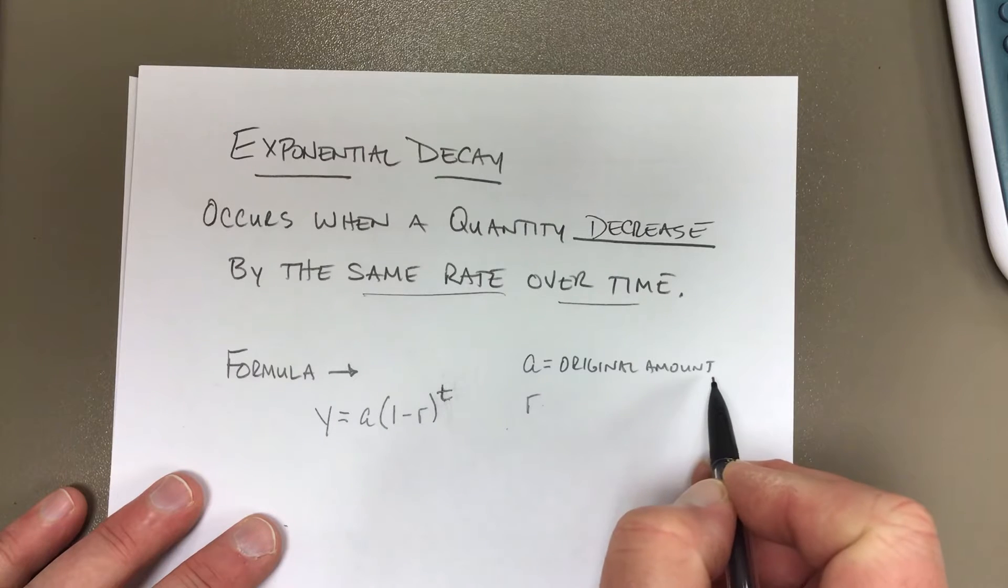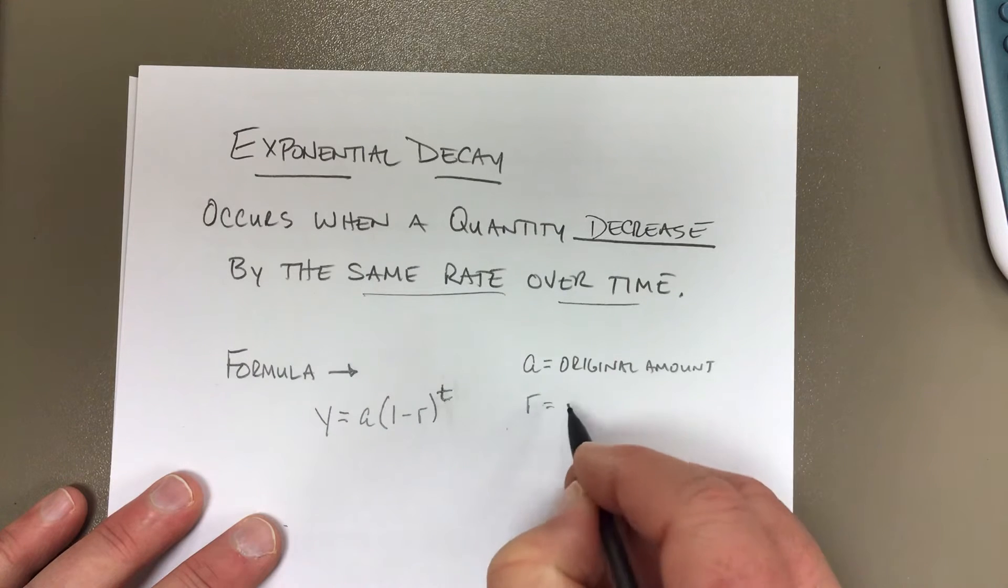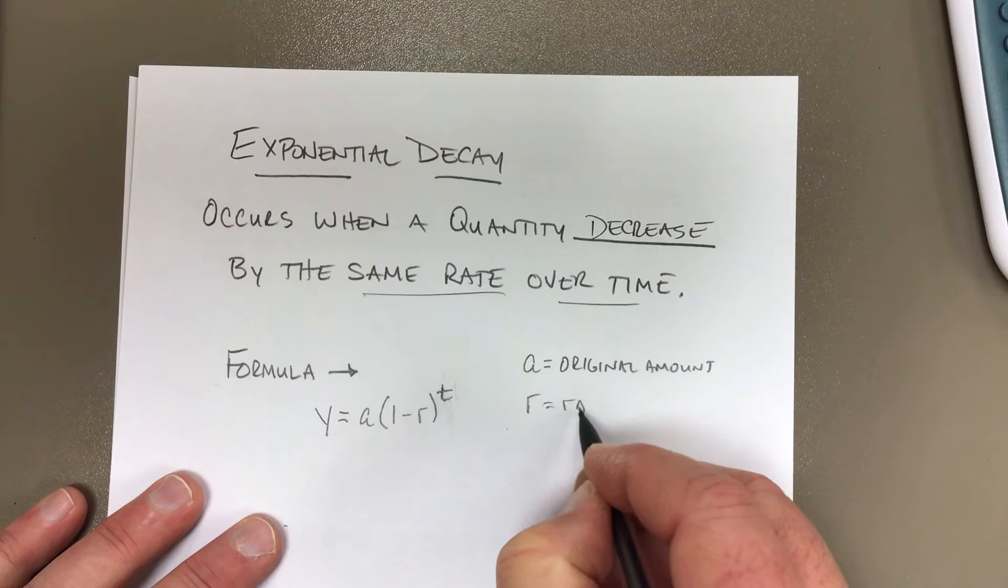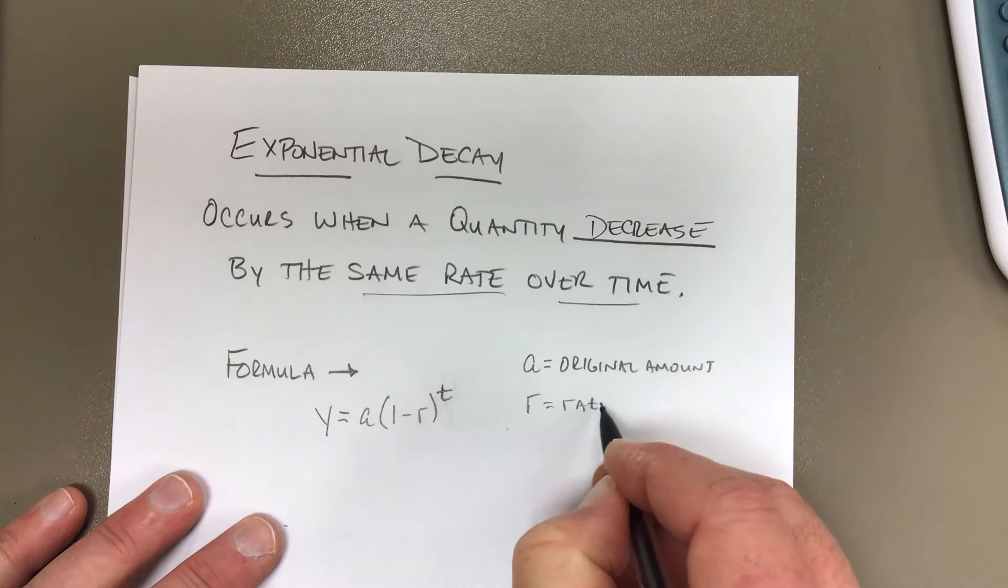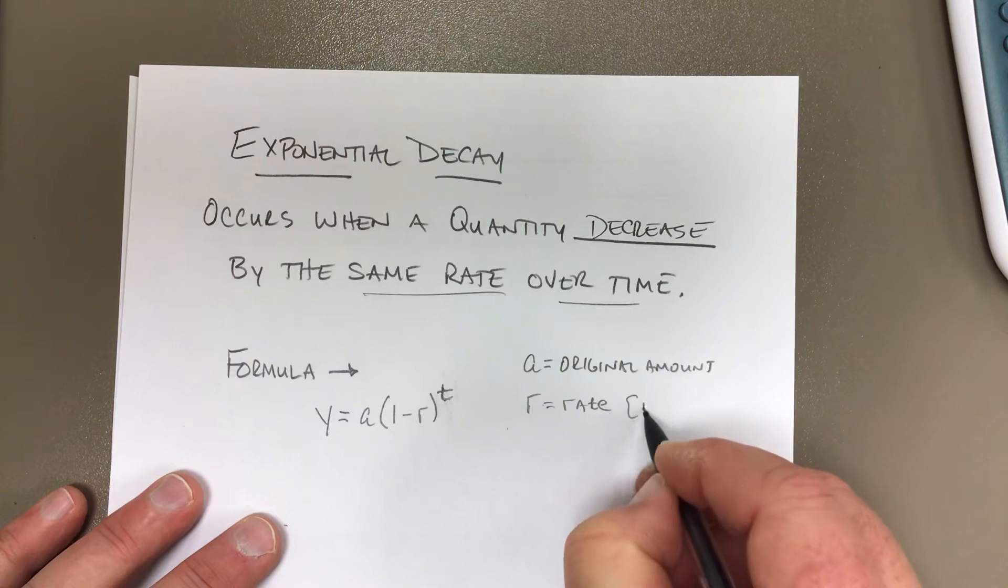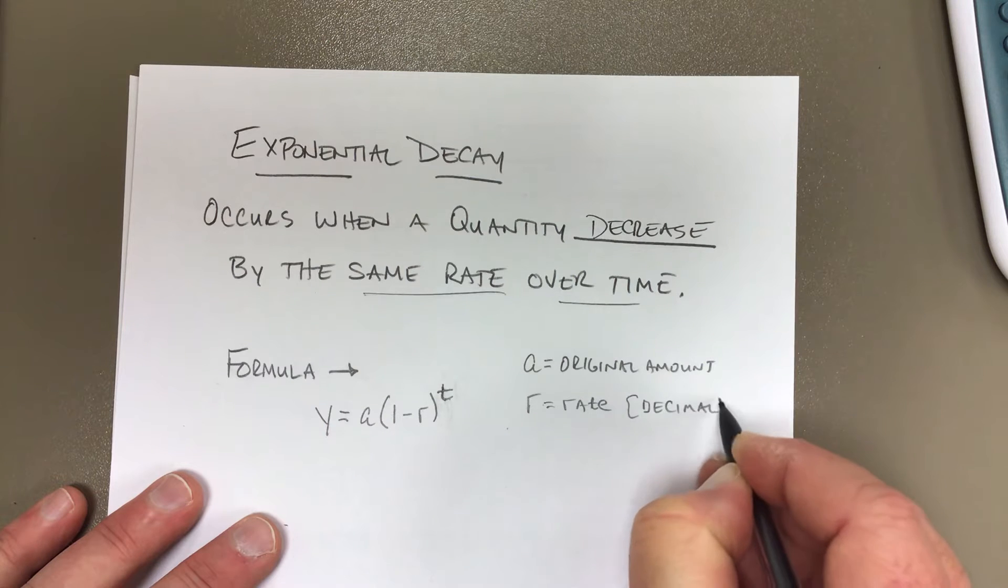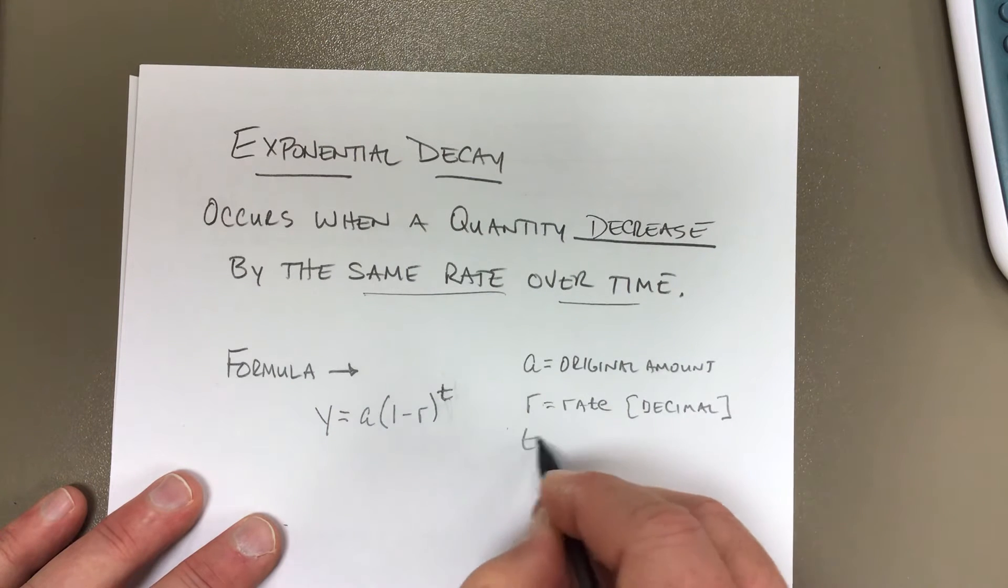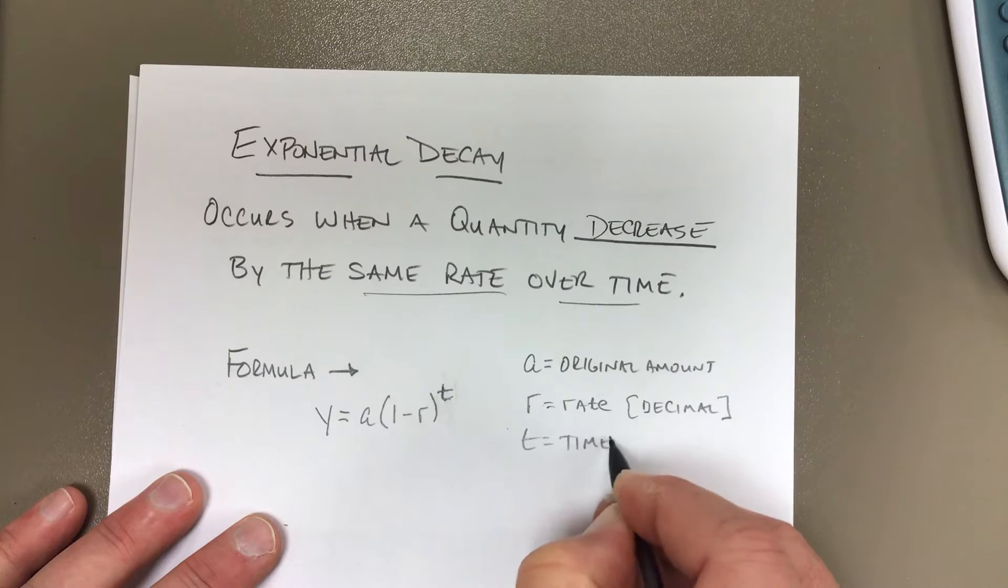So the a is the original amount. The r is the rate, and that has to be in a decimal form, and we'll talk about that in a second. And then the t is the time.